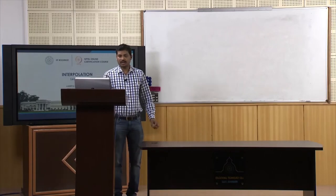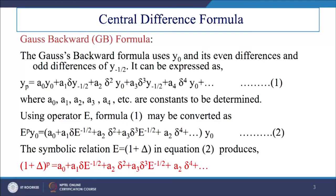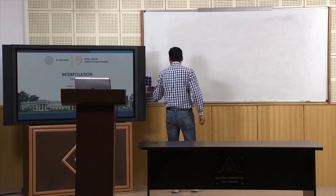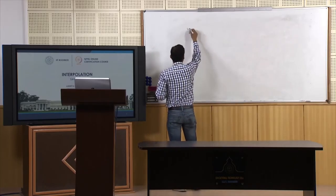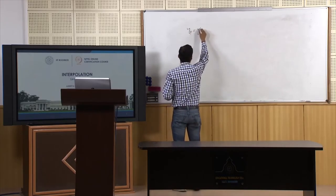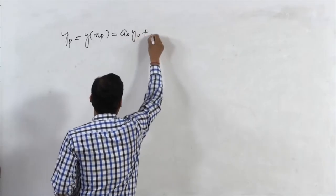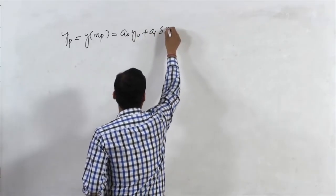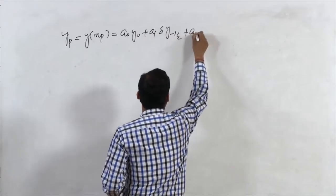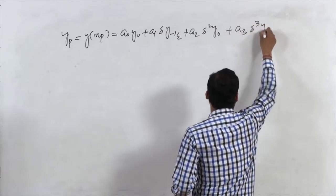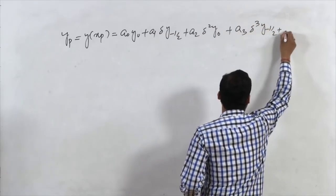In the last class we gave hints about the Gauss backward difference formula, where we use even differences of Y₀ and odd differences of Y(−½). The formula for Gauss backward difference is expressed as: Y(Xₚ) = A₀·Y₀ + A₁·ΔY(−½) + A₂·Δ²Y₀ + A₃·Δ³Y(−½), and so on.